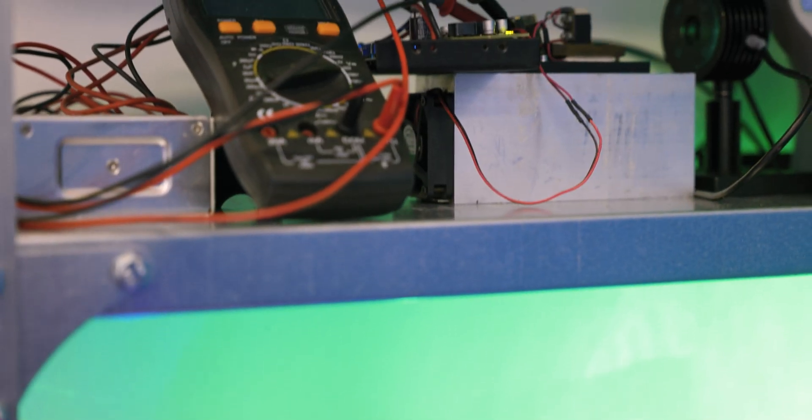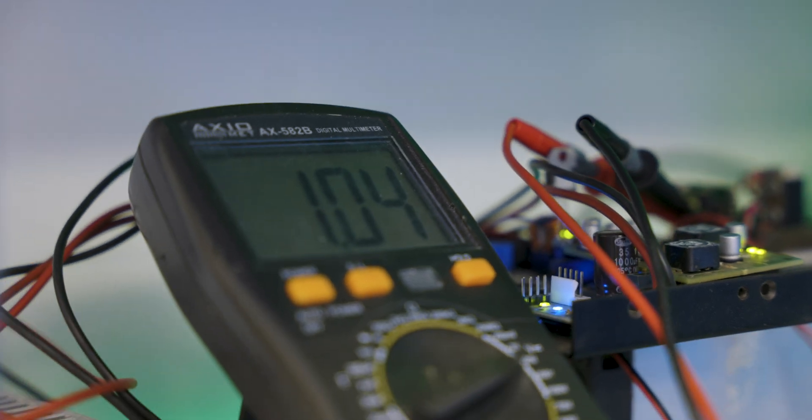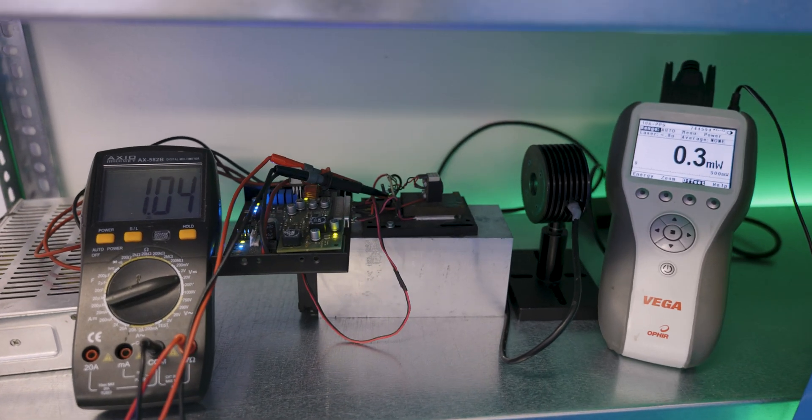Sometimes, the testing turns totally unexpected. One such test of a 1 watt 520 nanometer green diode commenced on the 17th of June 2014. Here, the recommended current was between 1.6 and 2 amps.